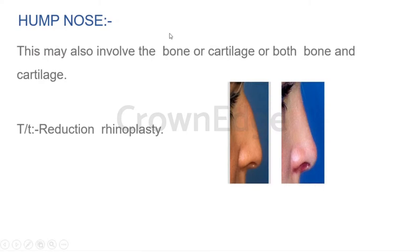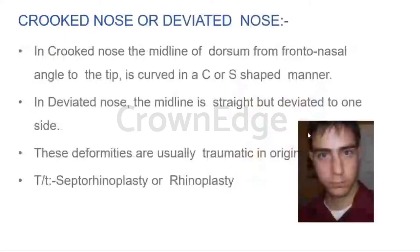Hump nose is the opposite deformity, where the bony or cartilaginous portion is more than normal, creating a bump. Rhinoplasty — plastic surgery of the nose — can reduce this deformity. Crooked nose is deviation of the nose to the right or left side, different from deviated septum, and can also be corrected through rhinoplasty.